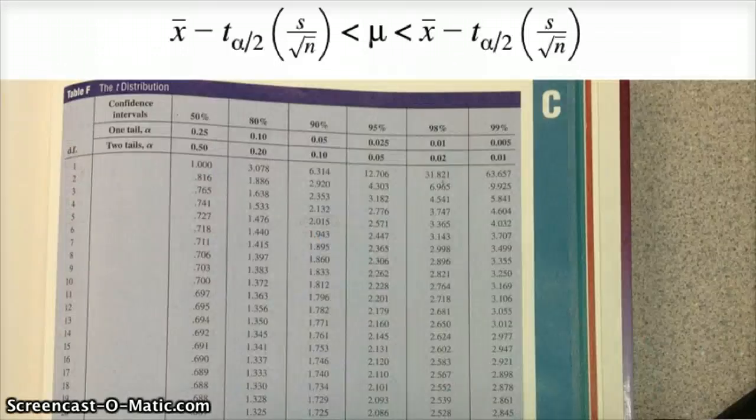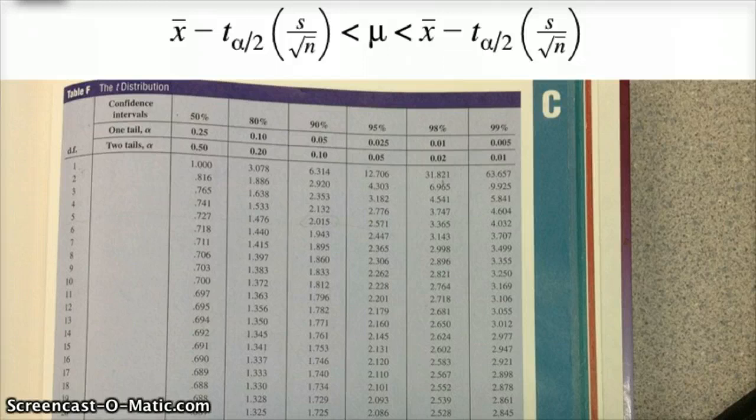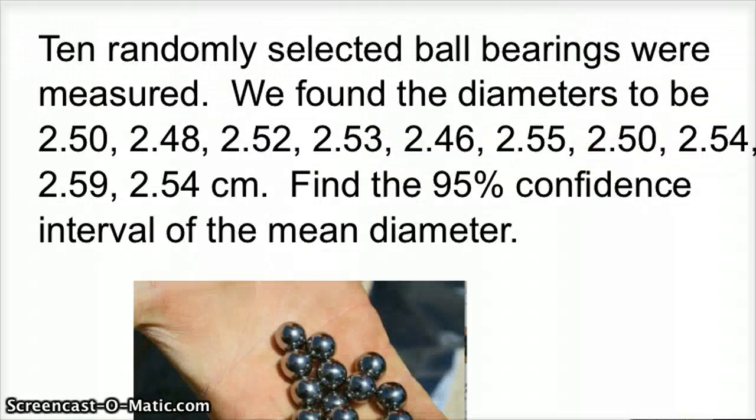All right, so there's the formula for the confidence interval for this situation. And below, I have a t-distribution table. Again, you could go online and probably find something better, but we're going to use the table, being just there. So here's an example.